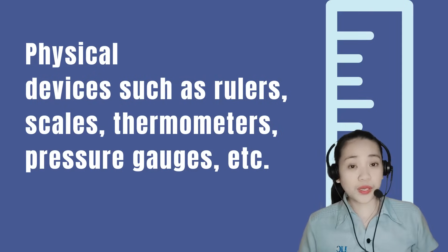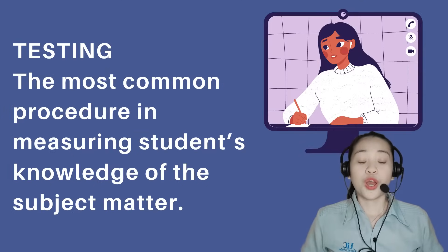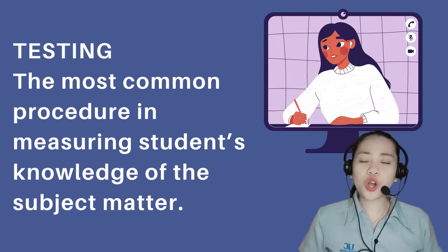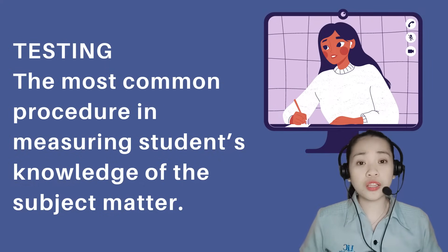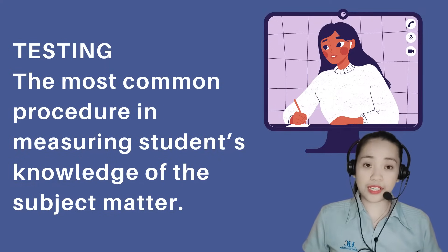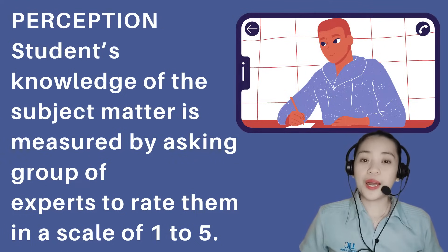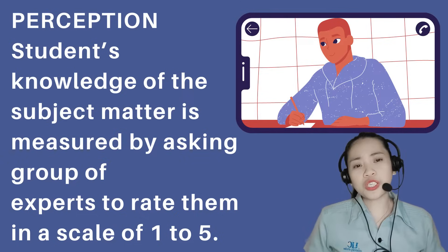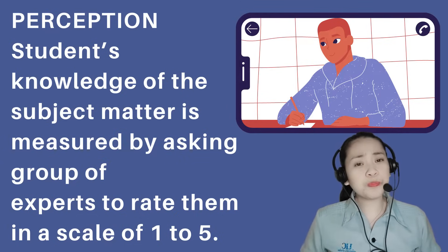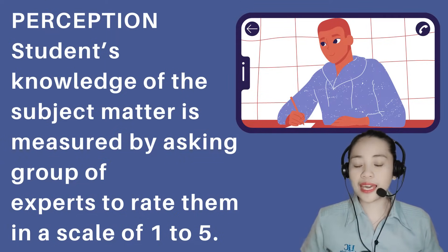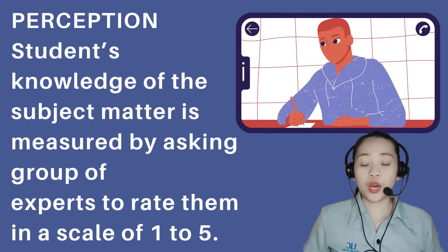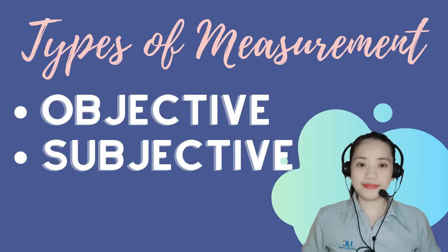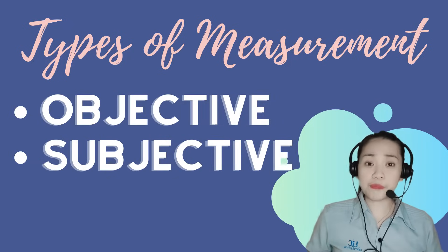Because of these challenges, we are going to use the following procedures. First, testing — this is the most common procedure in measuring students' knowledge of the subject matter. And second, perception — students' knowledge of the subject matter is measured by asking a group of experts to rate them on a scale of 1 to 5, with 1 being the lowest and 5 being the highest. There are two types of measurement: objective and subjective.